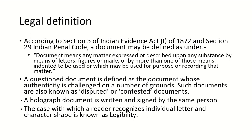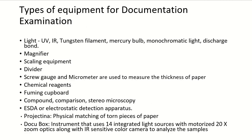Legibility is the ease with which a reader can recognize individual letter and character shapes. The various tools or equipment used for document examination include light sources — which can be UV, IR, tungsten, mercury, monochromatic, or discharge lamp — as well as magnifiers, scaling equipment, dividers, and screw gauges and micrometers.